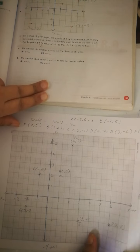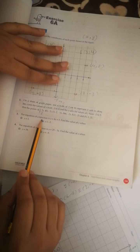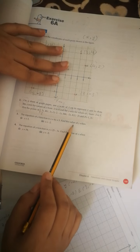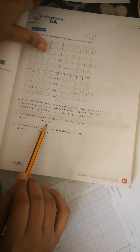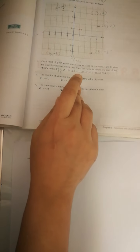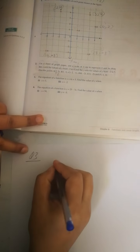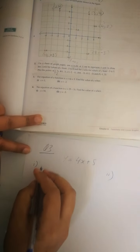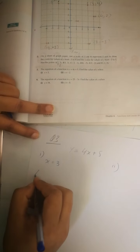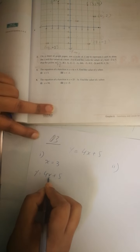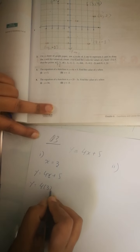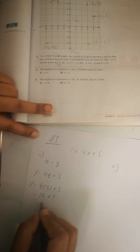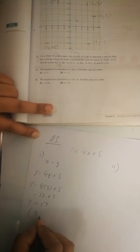Let's start question number 3. The equation of a function is y = 4x + 5. Find the value of y when x = 3 and when x = -2. For x = 3: substitute into the equation — y = 4(3) + 5 = 12 + 5 = 17. So when x = 3, y = 17.